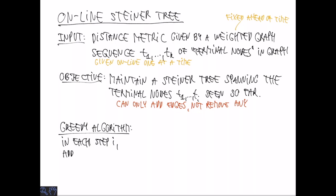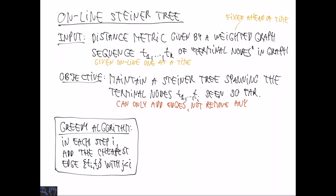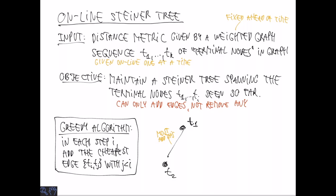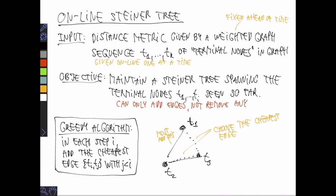An obvious approach is a greedy algorithm that in each step connects the new terminal to the existing tree in the cheapest possible way — simply choosing the cheapest edge from Ti to some previous terminal Tj. So first we add T1 to T2; for T3 we choose the cheaper of connecting to T1 or T2; for T4 we have three choices and pick the cheapest, and so on.